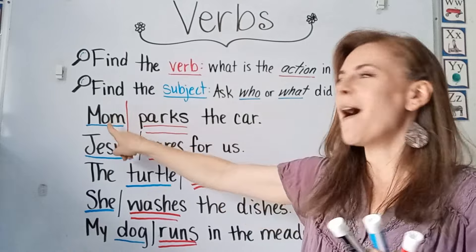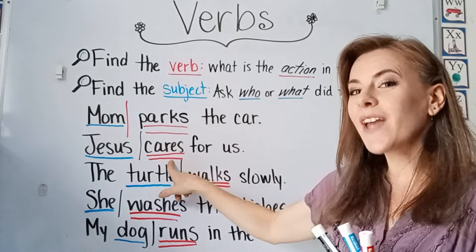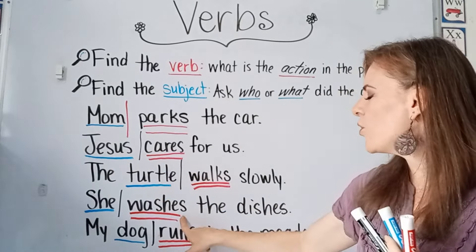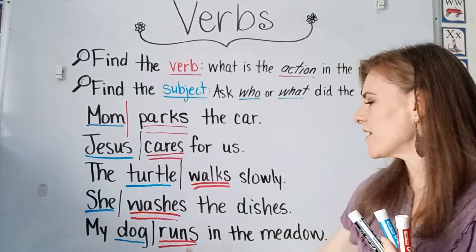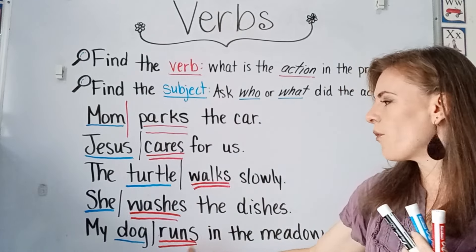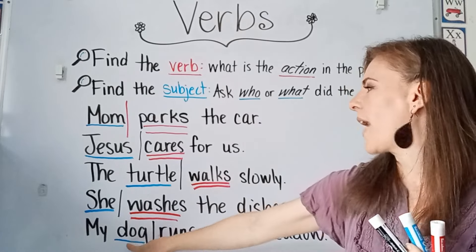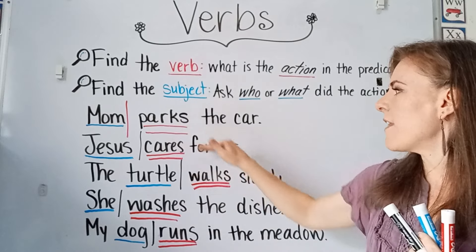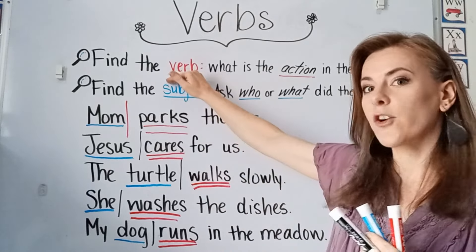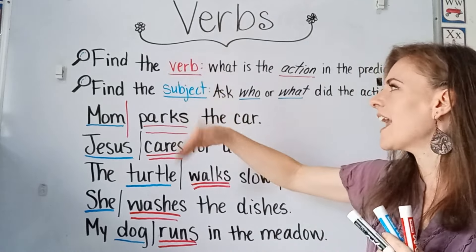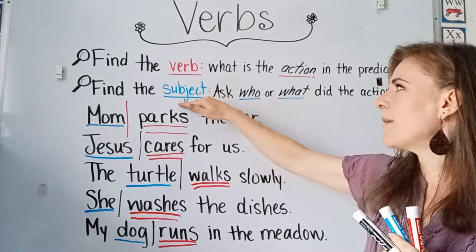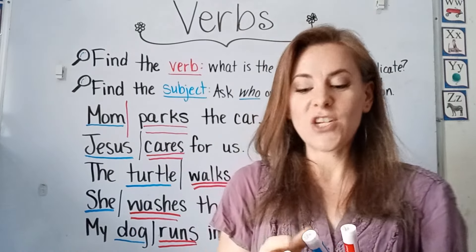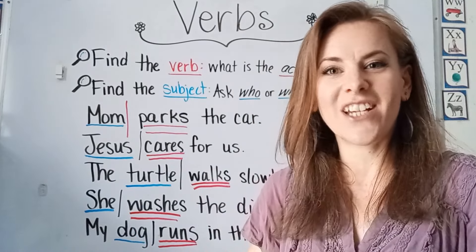Who parks? Mom. Who cares? Jesus. Who walks? The turtle. Who washes? She washes. Who runs? The dog runs. So all of these in the predicate are your verbs — they tell you the action. And then for the subject, you ask who or what is doing that action, and you will find the subject in your sentence.